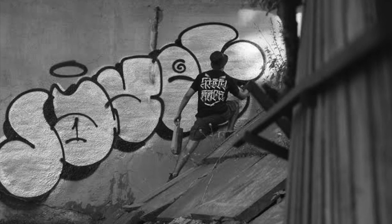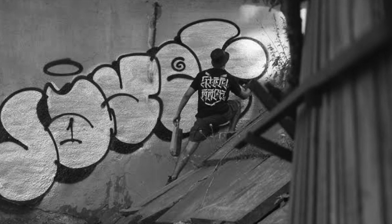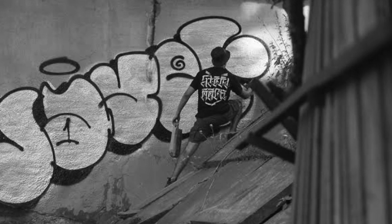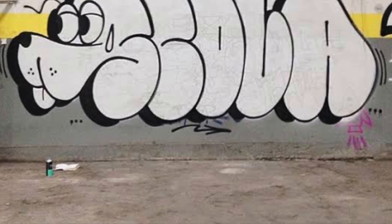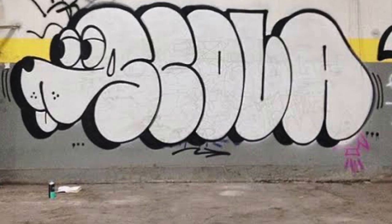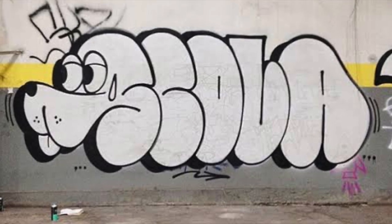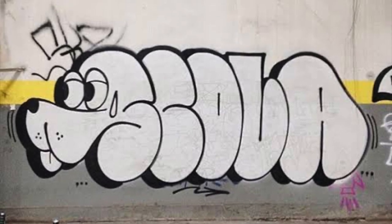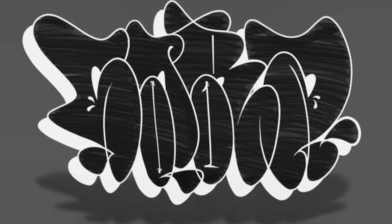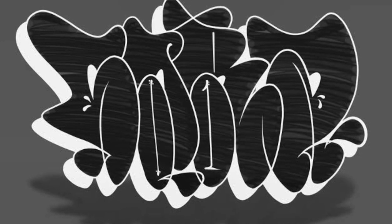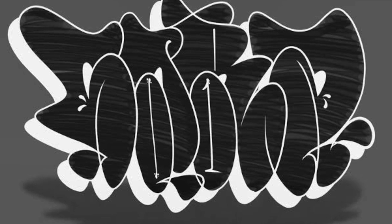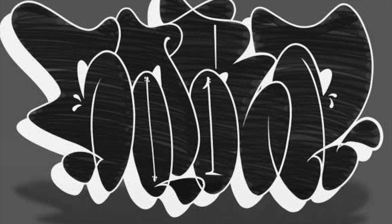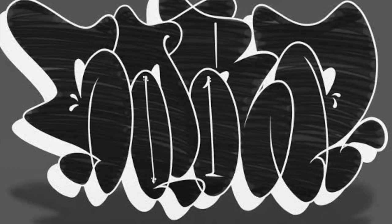Number two: throw-ups. A throw-up is another form of tagging. It is usually a more significant size, more sophisticated, and may use more paints and colors. Throw-ups are often written in bubble style writing using spray cans. There are many famous artists all over the world that specialize in this form of graffiti.